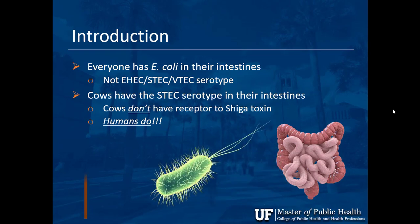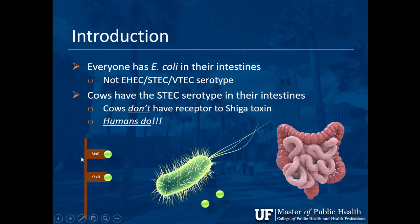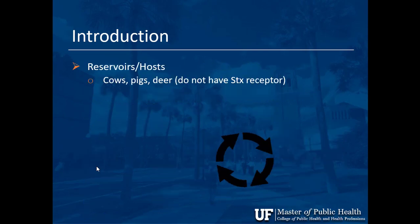The Shiga Toxin E. coli binds to the STX receptor on the intestinal lining in humans. There's a process where it inhibits protein synthesis inside the cell, and eventually the cell dies because it can't produce proteins. That leads to cell breakdown, blood vessels around the area bleed — hence bloody diarrhea. Cows lack this Shiga Toxin receptor, so they won't respond or get bloody diarrhea.